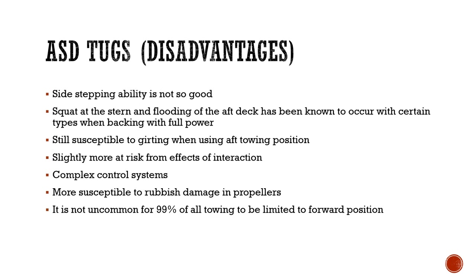The disadvantages of ASD tugs include the fact that their side-stepping ability is not very good. Squat at the stern and flooding of the aft deck has been known to occur with certain types when backing with full power. They are still susceptible to girding or capsizing when using the aft towing position.